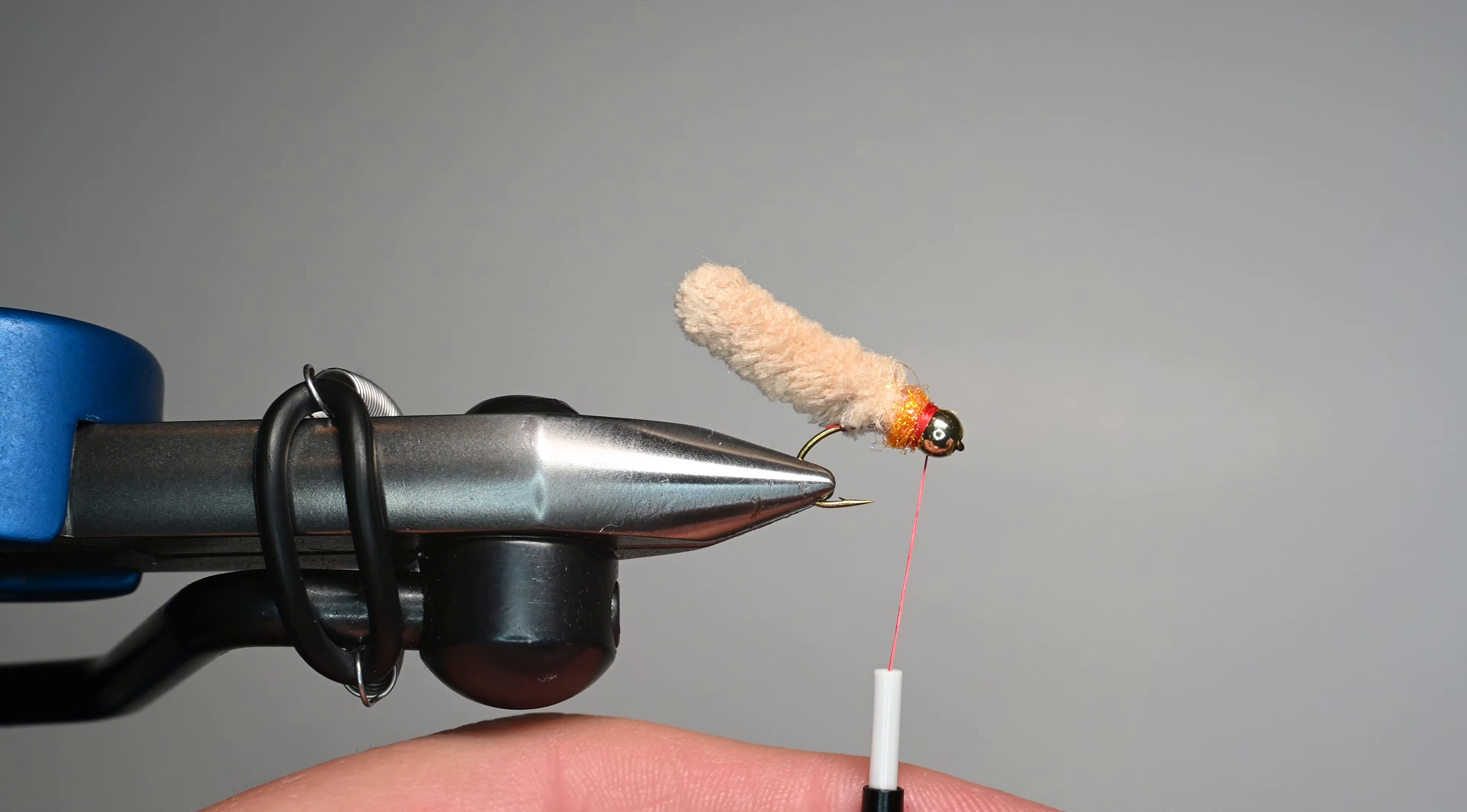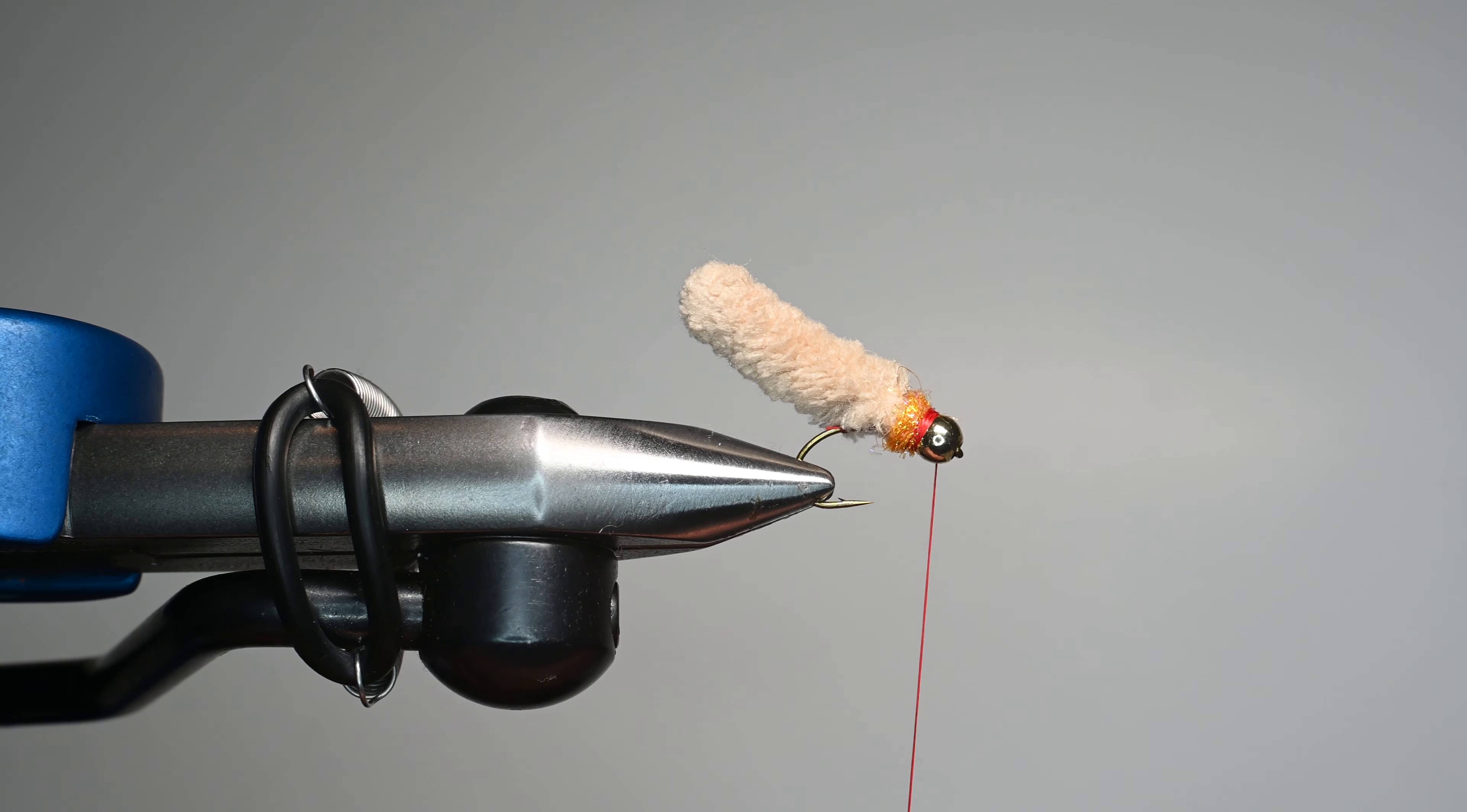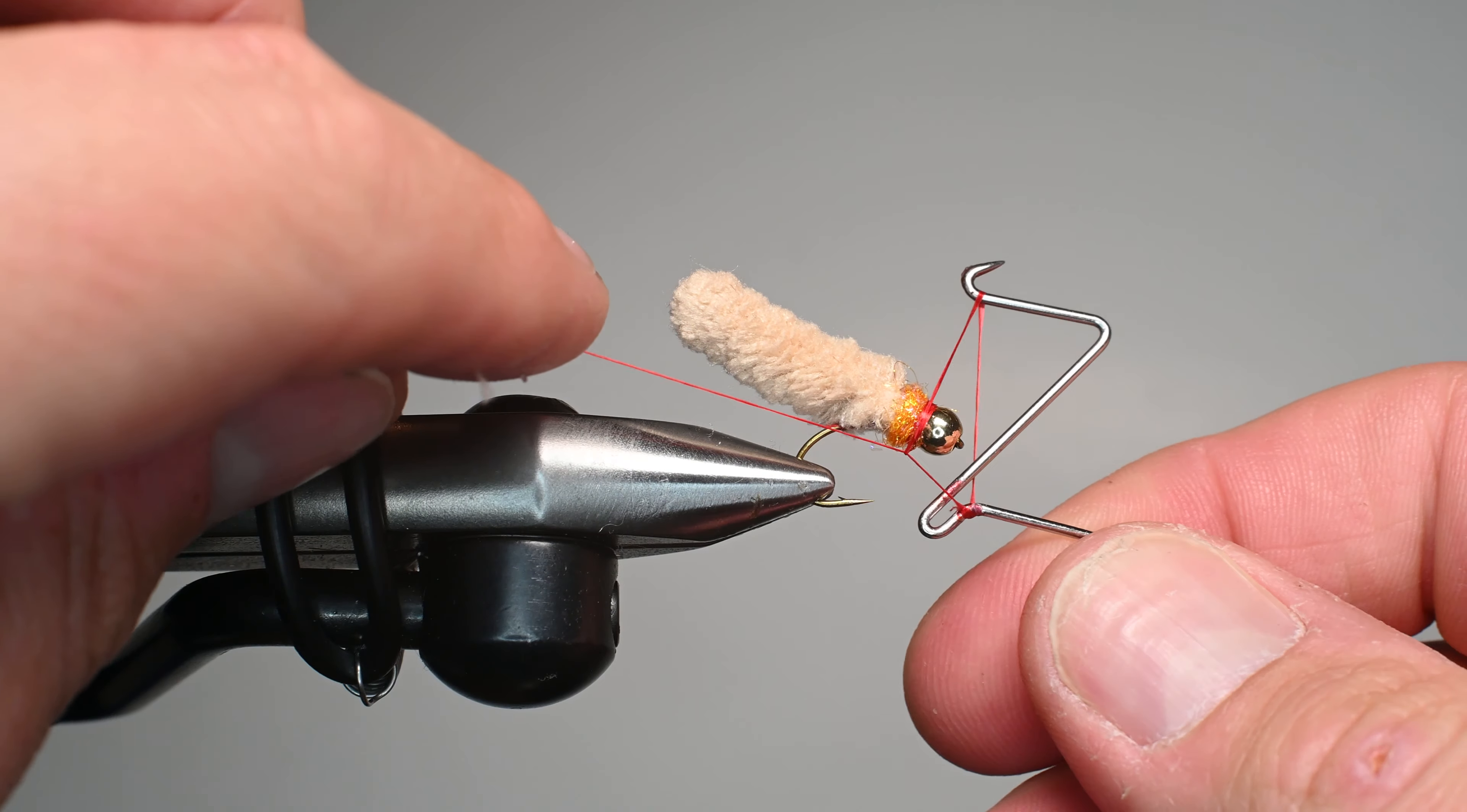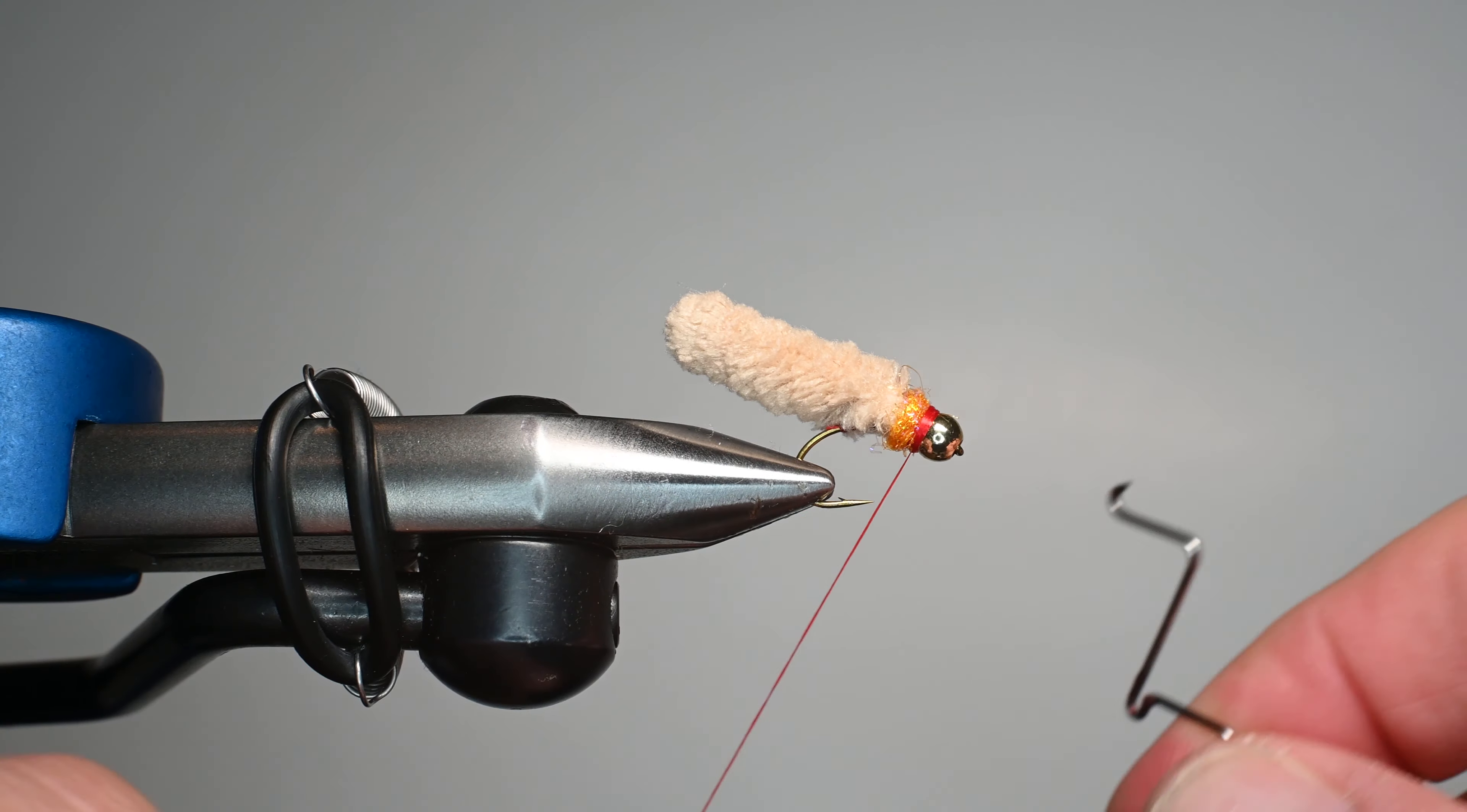And that is pretty much the fly. So let's go ahead and we will whip finish this fly and you just need to do a three turn whip finish. We're going to be using some UV resin or you could use some head cement to finish this off. So I'm just going to go one two three and bam we're golden.